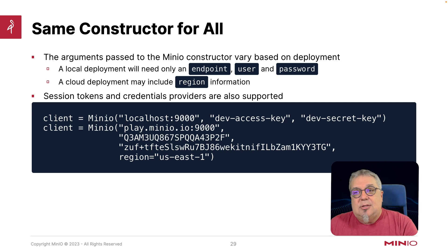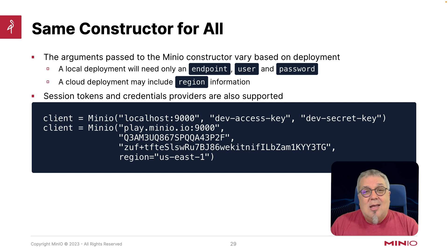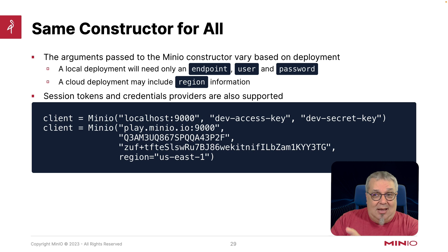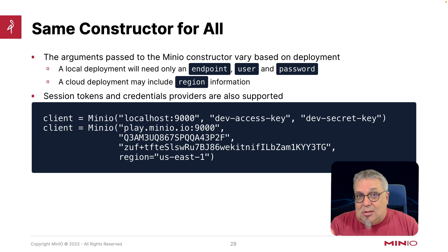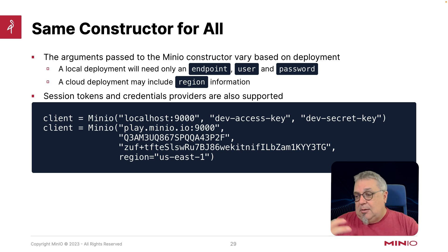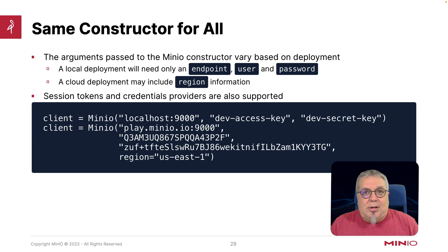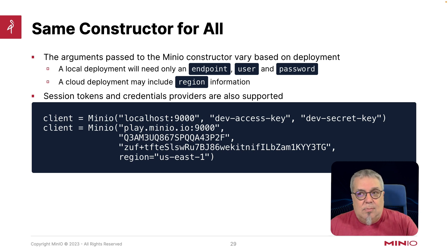The nice thing about this is that if I write my code in a certain way, I could put all of the details you're seeing in my code example into a config file and just read them. Which means that changing from a development environment to a production environment is trivial — I just change which config file I'm working with. I don't even have to change any code.